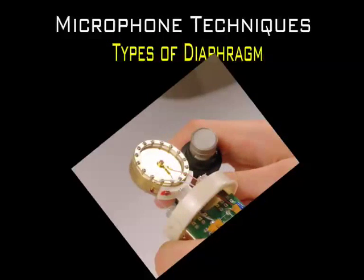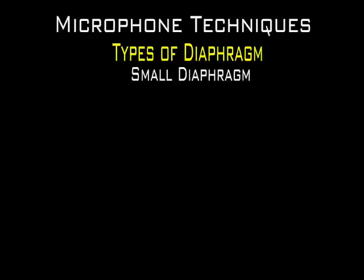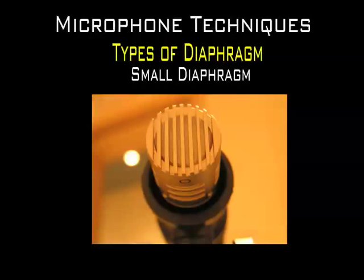The diaphragm is the membrane that first reacts to sound pressure. Within the same type of microphone, there are different applications depending on the size of the diaphragm. Generally speaking, small diaphragm microphones tend to do a good job capturing high frequency content and transients. Their applications include acoustic guitars, string instruments, brass, cymbals, and any other instrument where you would want to emphasize the high end. Here's the sound of an acoustic guitar with an AKG 451.